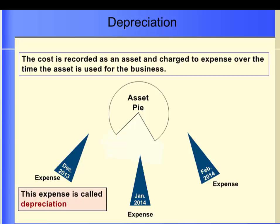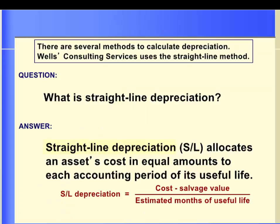Now let's move on to the concept of depreciation. When we buy an asset that will be used for many years, we will expense a portion of the cost of the asset during each of the periods that the asset benefits. This is called depreciation — the process of allocating the cost of long-term assets over their useful lives. We do not record the cost as an expense at the time the asset was purchased. The cost is recorded as an asset, such as equipment or building, and charged to the expense over the time the asset is used in the business. This periodic expensing of the original cost is called cost allocation or depreciation.